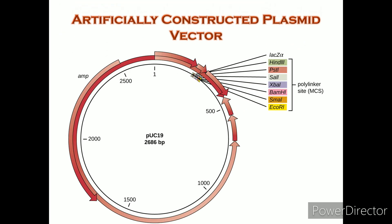The artificially constructed plasmid vector PUC19 is commonly used for cloning foreign DNA. Arrows indicate the directions in which the genes are transcribed. Note the polylinker site containing multiple unique restriction enzyme recognition sites found within the LAG-Z reporter gene. Also note the ampicillin resistance gene encoded on the plasmid.